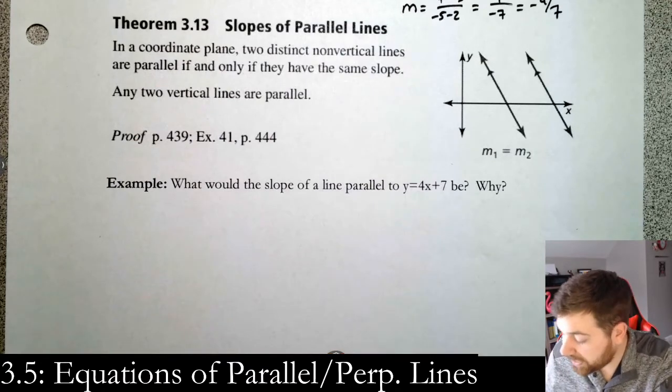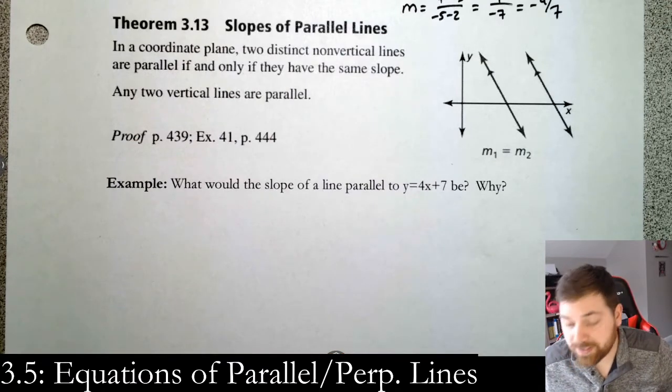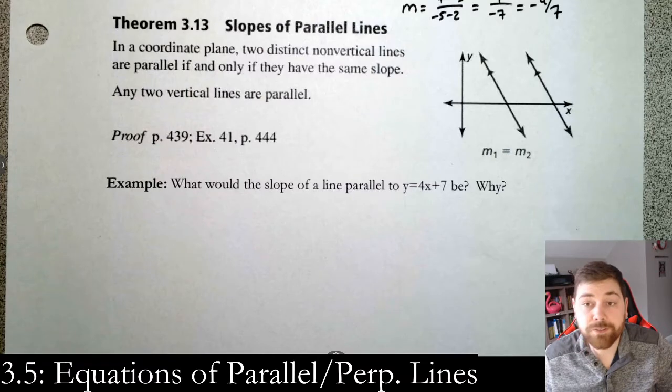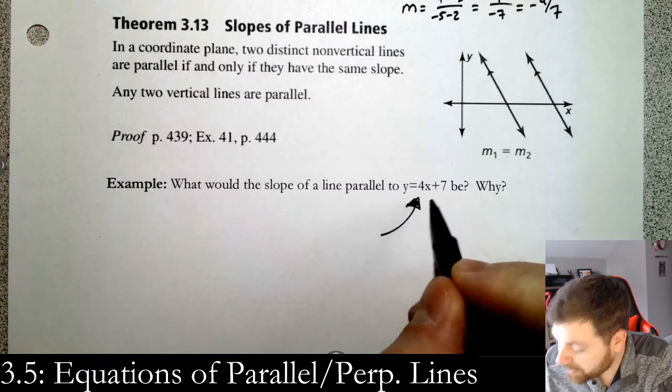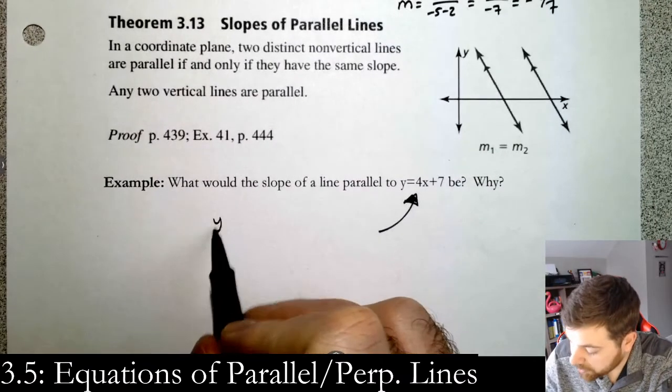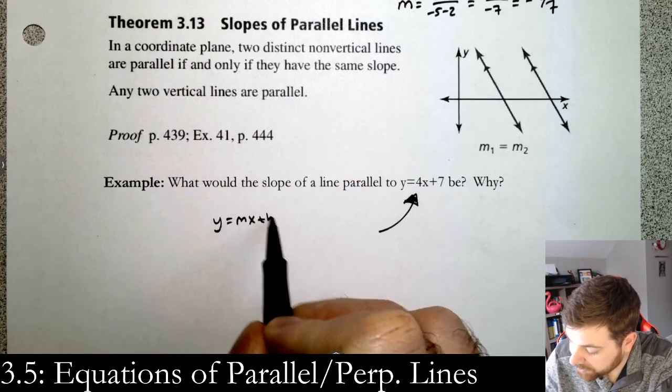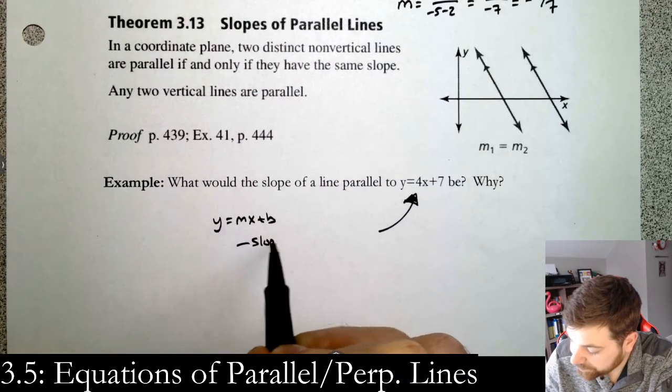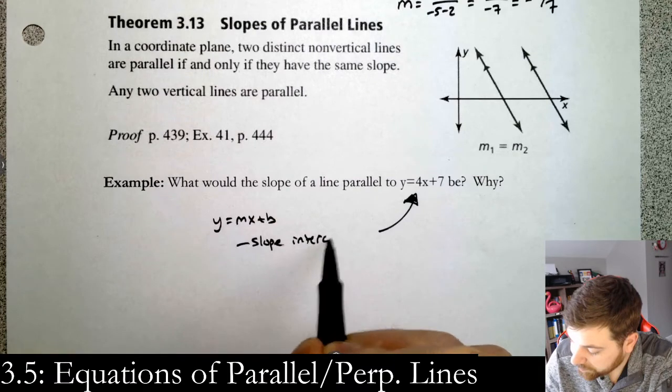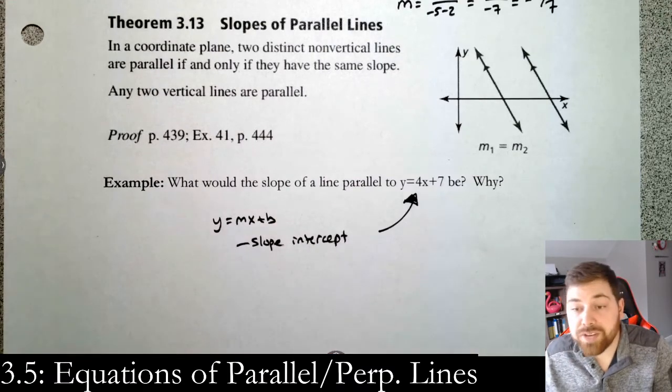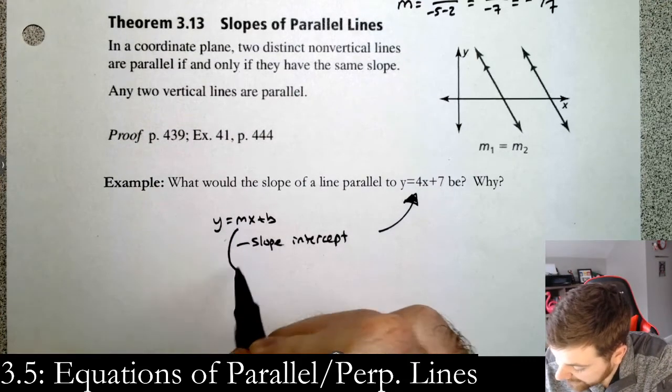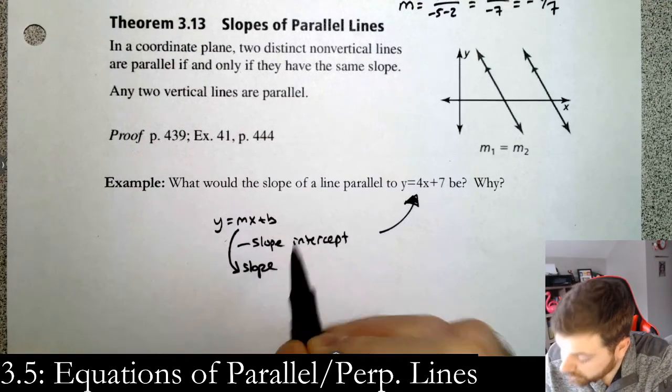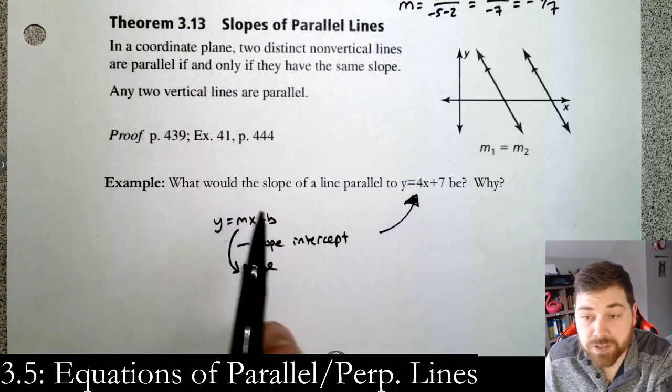It asks, what would the slope of the line parallel to y equals 4x plus 7 be and why? First you have to know what the slope of this line is. Something pretty important: if you remember, y equals mx plus b is slope intercept form. You need it in this form to just read off the slope, because in here that m is the slope. So if you can get it in this form, you can tell me what the slope is.